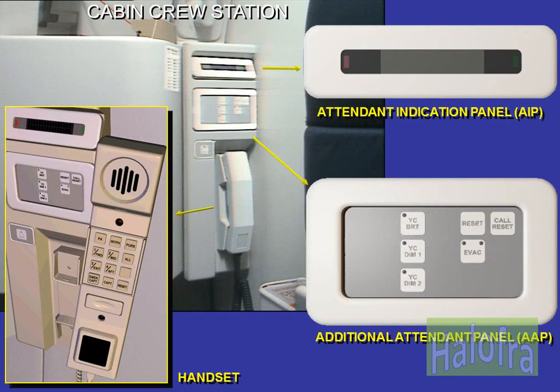Each crew station is equipped with a communication system including a handset, an attendant panel (FAP or AAP), and an attendant indication panel, AIP.